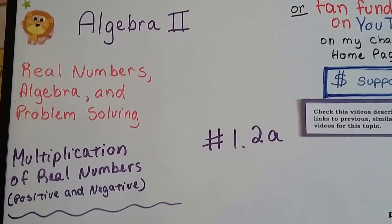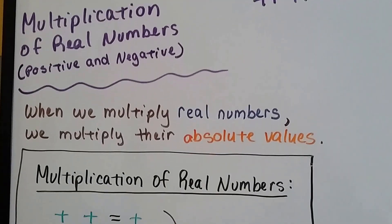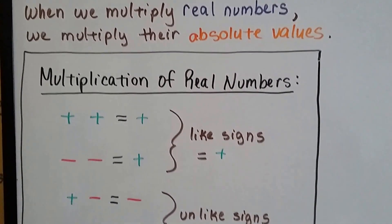Algebra 2, 1.2a, multiplication of real numbers, positive and negative. When we multiply real numbers, we multiply their absolute values.